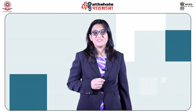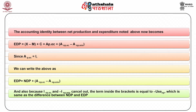Net accumulation of other non-produced natural assets, ANP.ENB, is also negative. To sum up, the accounting identity between net production and expenditure becomes: ADP equals exports minus imports plus consumption plus AP.EC plus ANP.EC minus ANP.ENB. Since AP.EC equals I, we can rewrite that ADP equals NDP plus the two terms ANP.EC minus ANP.ENB. Also, because INP.EC and minus INP.ENB cancel each other out, the term inside the bracket equals minus USE_NP, which is the same as the difference between NDP and EDP, and hence the identity is proved.